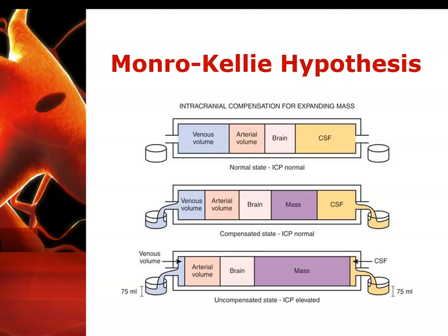Compensation usually begins with CSF displacing itself or there is an alteration in venous flow. In very small children, the fontanelles are still open, so there is some room for expansion, but not in adults. Add on top of that a big tumor or lots of swelling due to trauma, and there is not a lot that can be done to keep the ICP within normal ranges — the pressures rise.